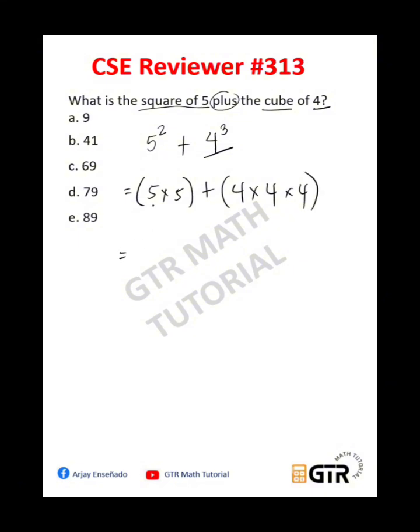Okay, so let's just evaluate this. 5 times 5, that is equal to 25, plus 4 times 4. So 4 times 4, this is 16. And then 16 times another 4, that is equal to 64.